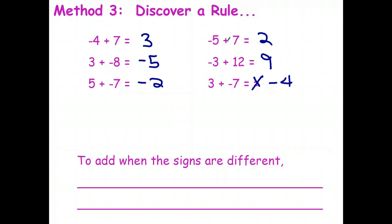One thing I notice: here I've got a 3 and an 8, and I get 5 for the answer — that's like 8 minus 3. Here I've got a 3 and a 12; 12 minus 3 is 9. So when I'm adding two numbers with different signs, in a way what I'm really doing is subtracting.